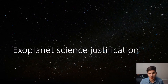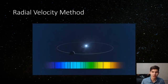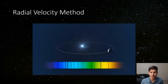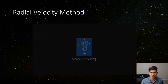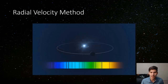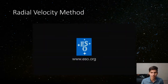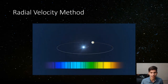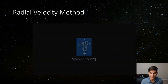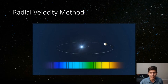When stars host orbiting planets, they orbit each other about their shared barycenter. The portion of stellar motion along our line of sight — the radial velocity — can be inferred from Doppler shifts in repeated observations of the star's spectra. These radial velocities can be used to indirectly infer the presence of an exoplanet. This method is one of the most successful techniques for exoplanet discovery and characterization, and currently the most common way to get planet masses. A significant barrier is the existence of time-variable features in measured spectra from both telluric absorption and stellar variability.